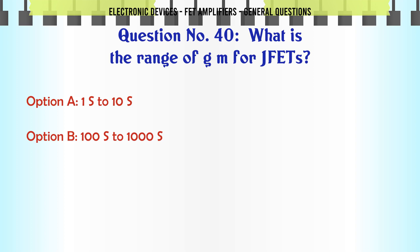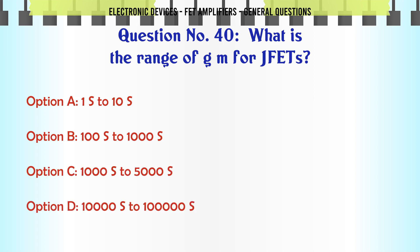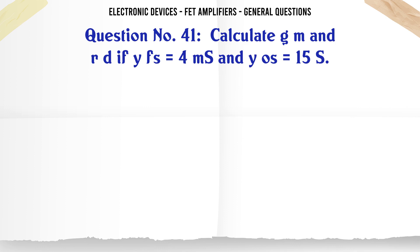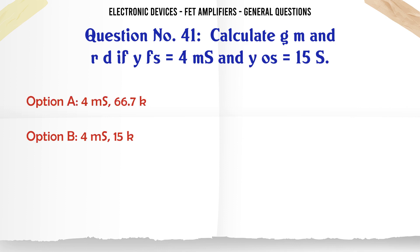What is the range of GM for JFETs? A. 1µS to 10µS. B. 100µS to 1000µS. C. 1000µS to 5000µS. D. 10000µS to 1000µS. The correct answer is 1000µS to 5000µS.